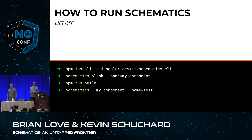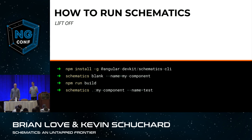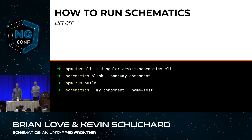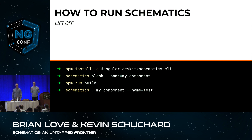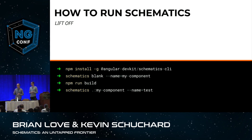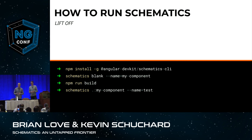So how do we get started with schematics? The first thing you need to do is install an additional CLI — this is not the Angular CLI you're already using, but there's a schematic CLI. You can use NPM or Yarn to install that globally, and it comes out of the Angular Dev Kit. After you install that, you have the schematics executable. In this example we're going to create a new project — similarly to ng new, you can use schematics blank followed by the name of the project. Just like TypeScript or Angular files, you compile it with the build command and execute it with the schematics executable, specifying the path, a colon, the name of the schematic, and any options it may have.